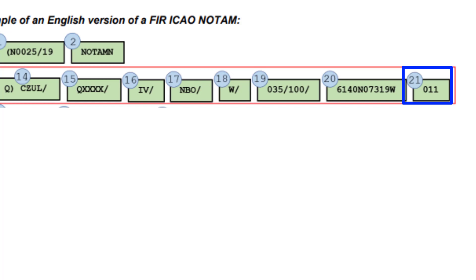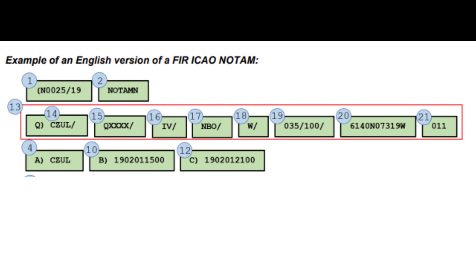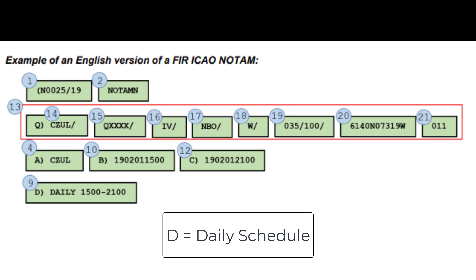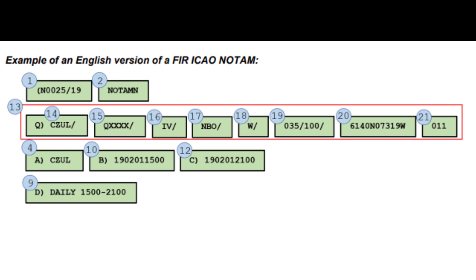That finishes the qualifier field, which tells you everything you need to know about what the NOTAM generally concerns and where it's located. The A field gives you the IKO location identifier or the FIR affected by the NOTAM. The B field tells you the time the NOTAM begins. The C field is the time the NOTAM concludes. The D field, when applicable, shows the daily schedule of the NOTAM — for instance, during COVID, many approach control facilities would be down for an hour for sanitation between shifts, and that daily downtime would go in the D field.